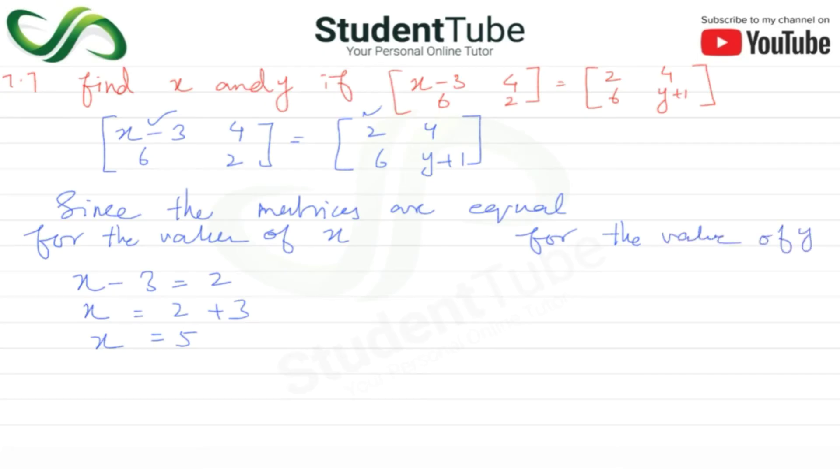We compare both matrices. So see, 2 is equal to y plus 1. So this is done: y is equal to 2 minus 1, so this is 1. So what value is x? 5.